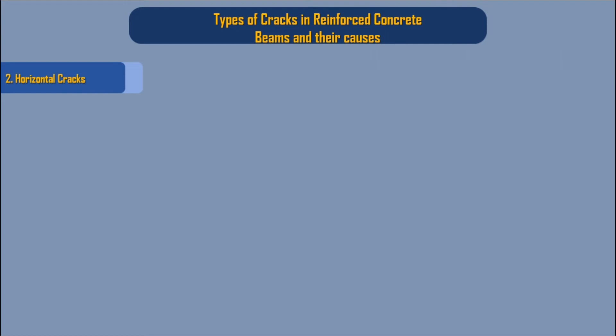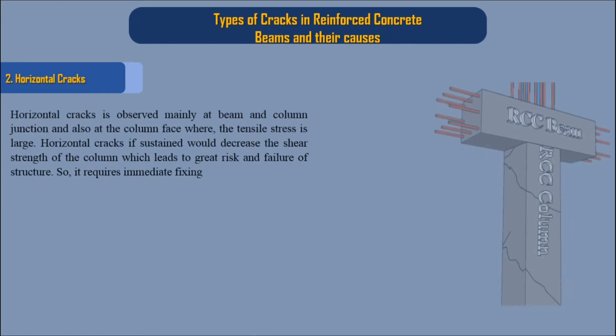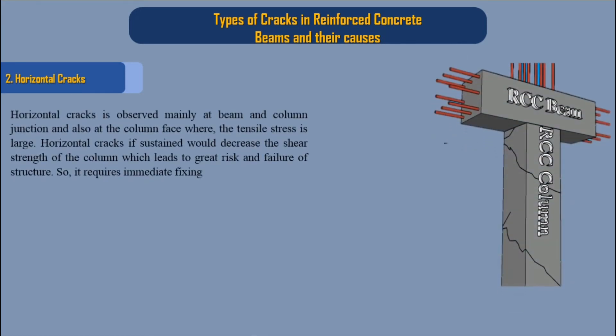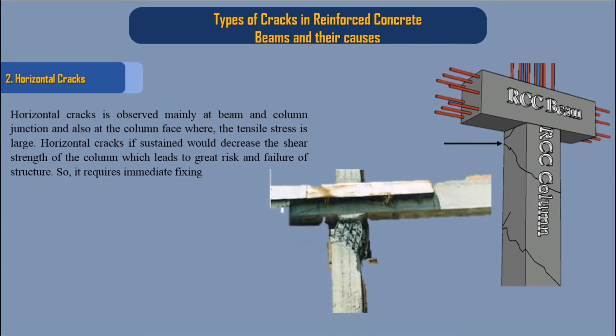2. Horizontal Cracks. Horizontal cracks are observed mainly at beam and column junctions and also at the column face where the tensile stress is large. Horizontal cracks, if sustained, would decrease the shear strength of the column, which leads to great risk and failure of the structure. So it requires immediate fixing.